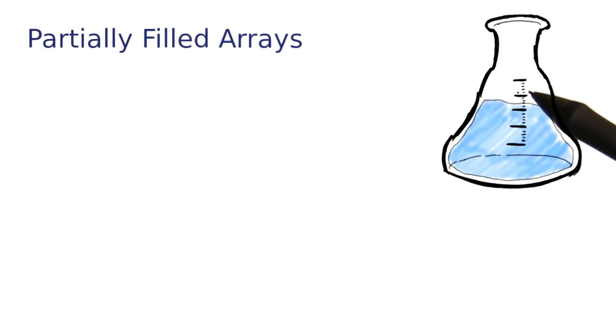So here I have my partially filled beaker. I fill in more and more. And eventually when it gets full, what choice do I have? I have to get a bigger one and pour everything into that. It's the same with partially filled arrays.